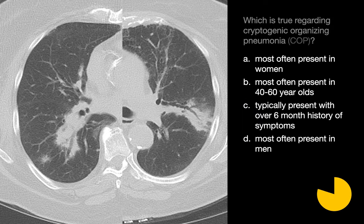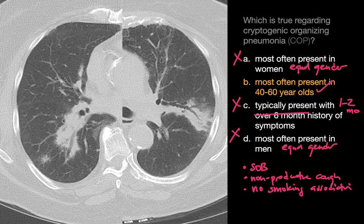Which of the following statements about cryptogenic organizing pneumonia are true? The answer is B: most cases present in middle-aged folks in their 40s through 60s. The other statements are false, since COP presents equally with regards to gender, patients usually present with a one to two month history of symptoms like breathlessness, non-productive cough, weight loss, malaise, and fever, and there is no association between COP and smoking.